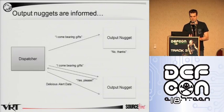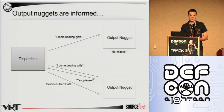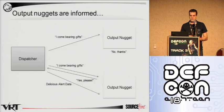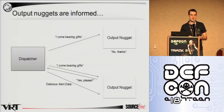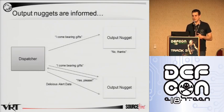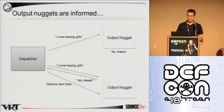If they are interested, then a message is sent back indicating what kind of information they want: do they want long versions of the data, do they want normalized data, do they want the timestamp, the source IP? And if they do, the dispatcher packages all that information up for the output nugget, and the output nugget is then responsible for formatting it the way that it's designed to do.